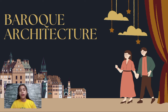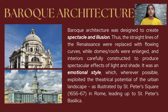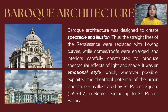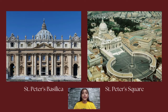Now we come to the last topic about Baroque art: Baroque architecture. Baroque architecture was designed to create spectacle and illusion. The straight lines of the Renaissance were replaced with flowing curves, while domes or roofs were enlarged and interiors carefully constructed to produce spectacular effects of light and shade. It was an emotional style which, wherever possible, exploited the theatrical potential of the urban landscape, as illustrated by St. Peter's Square in Rome leading up to St. Peter's Basilica. These are pictures of St. Peter's Basilica and St. Peter's Square.